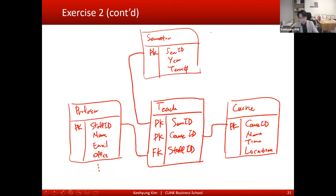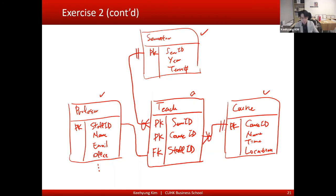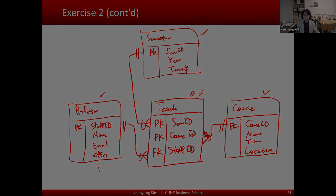Between the previously existing entities — semester, professor, and course — connected to this new assignment table, it should always be a one-to-many relationship. So semester ID is connected by many, course ID connected by many, and here is one-to-one. Same for staff ID: many on one side and one-to-one on the other. The reason is because this is an assignment table — a course can be assigned many times, a semester can be assigned many times, and a professor can be assigned many times. That is basically the rule for translating a ternary relationship in an ER diagram into a relational model for implementation.